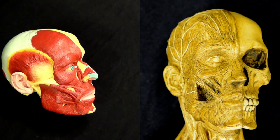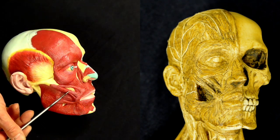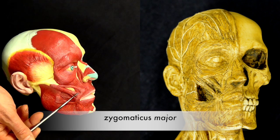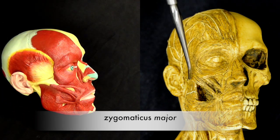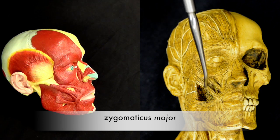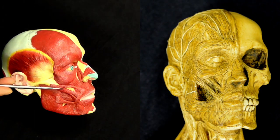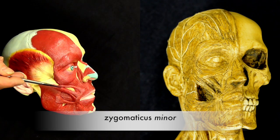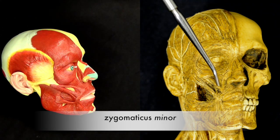Now for the muscles of facial expression. This muscle is the zygomaticus major, and we can see it here too. And then just above that we have the zygomaticus minor, which is here on this model.